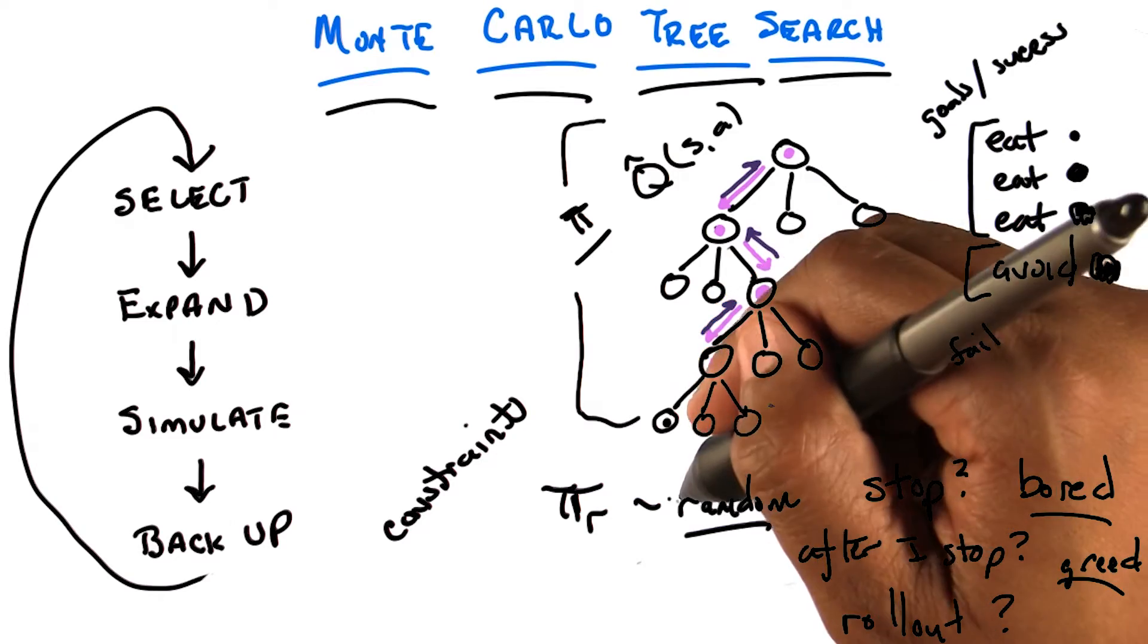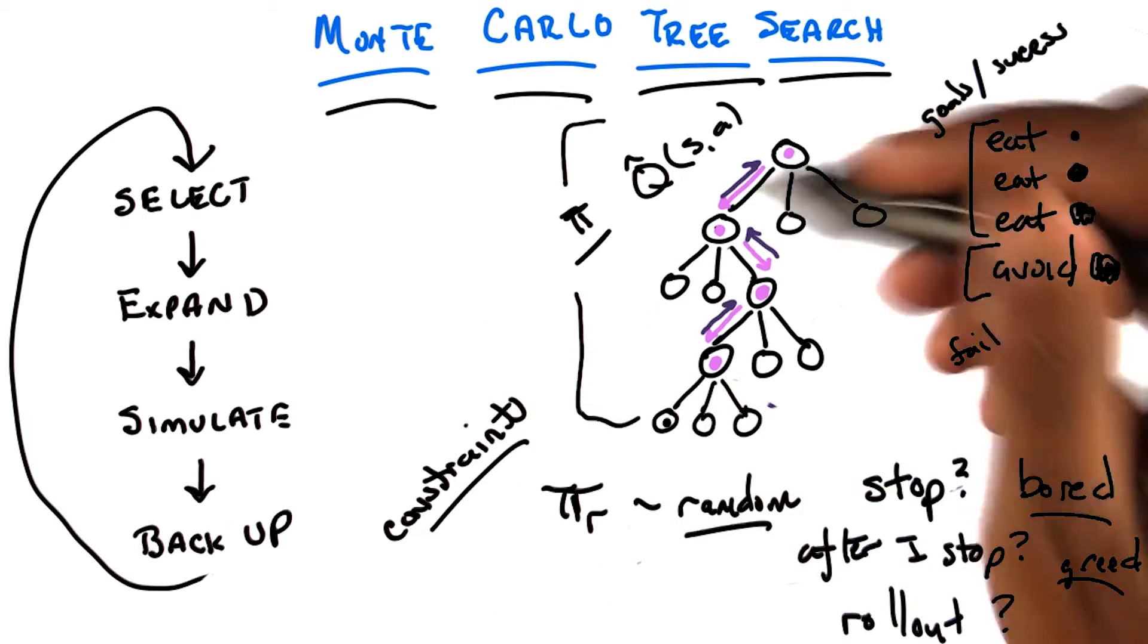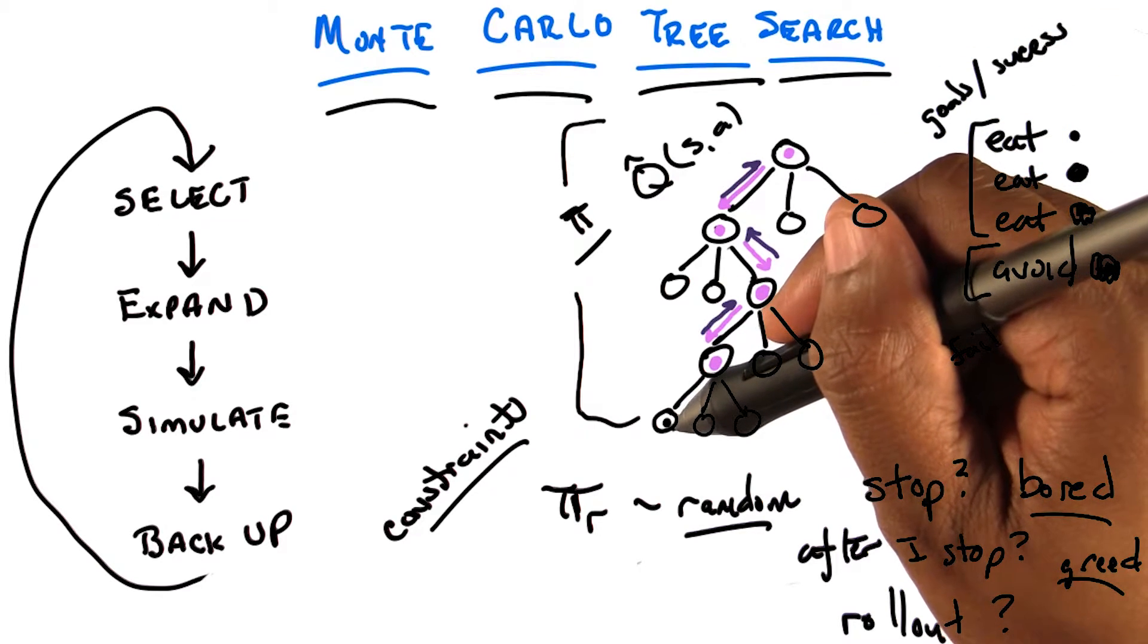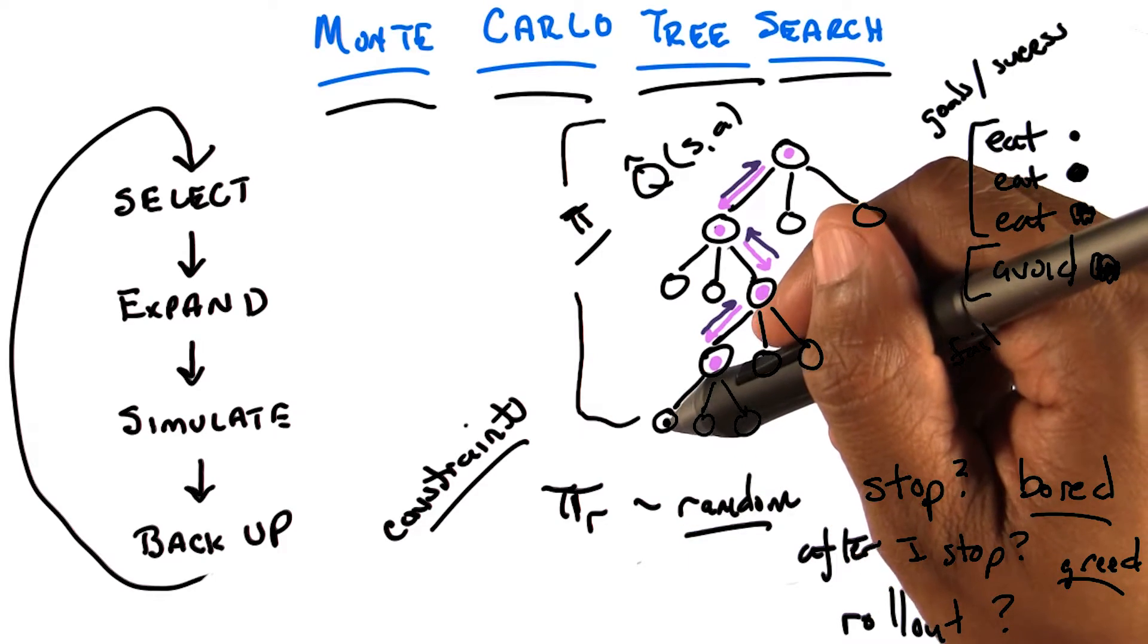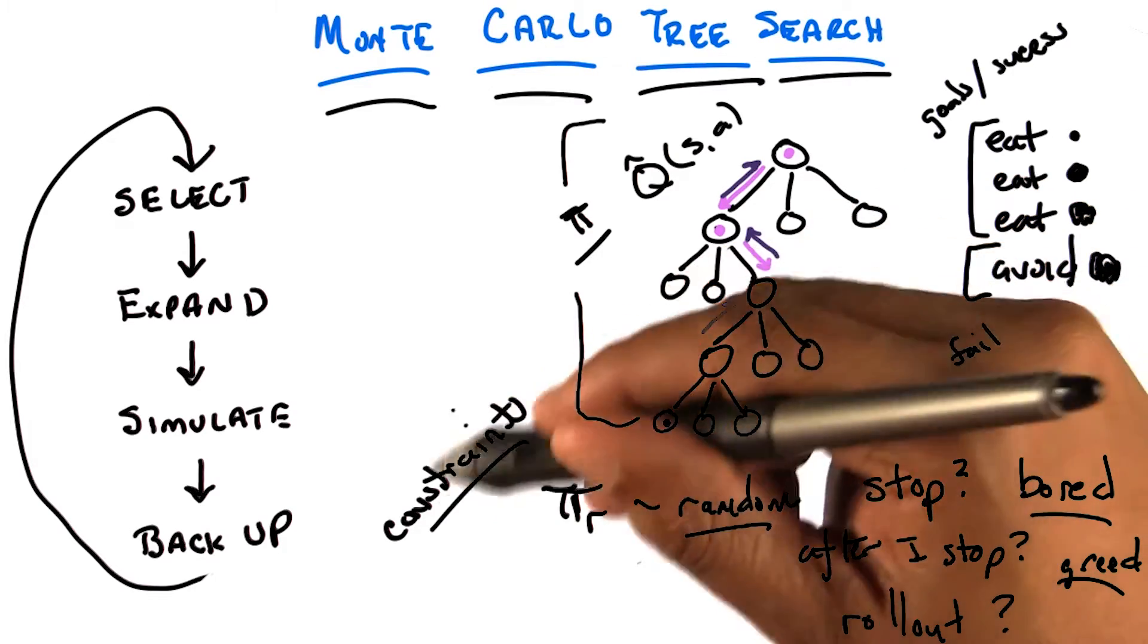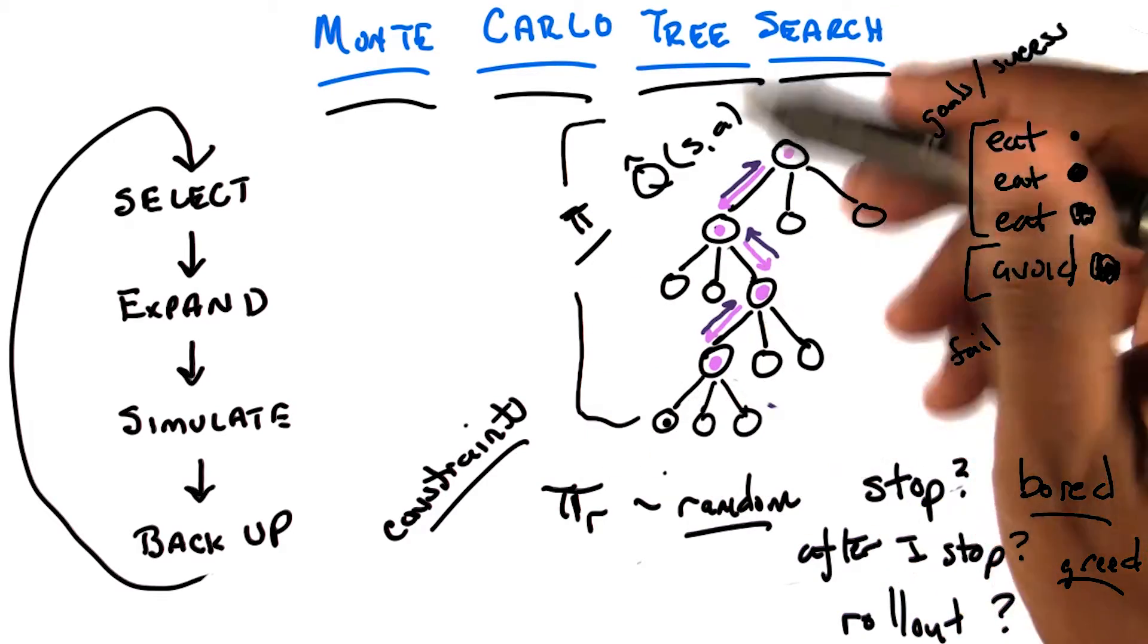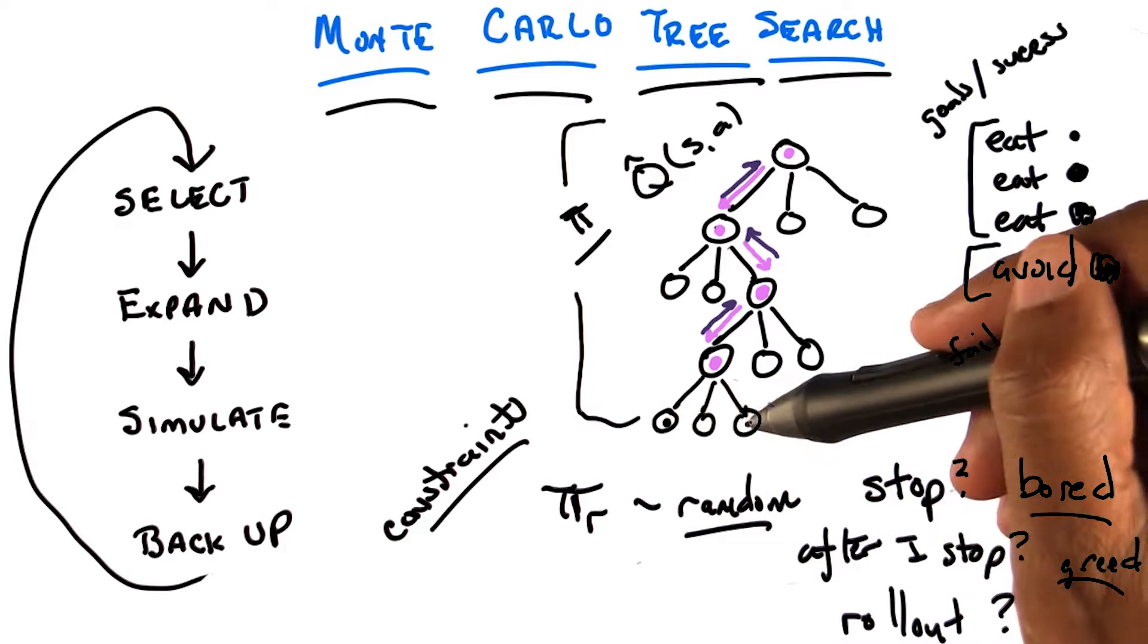I'm going to try to behave randomly while still honoring whatever constraints I happen to have defined. So here, rather than trying to just walk around until something bad happens, I'm going to try to stay alive as long as possible, which is what this constraint tells me. And that's a different kind of rollout policy, but one that I claim gives you a sort of better view of the goodness of this state.